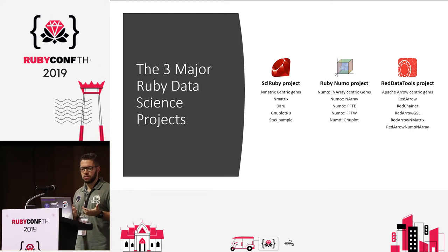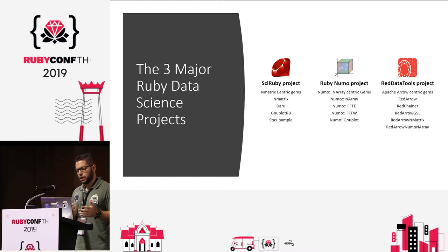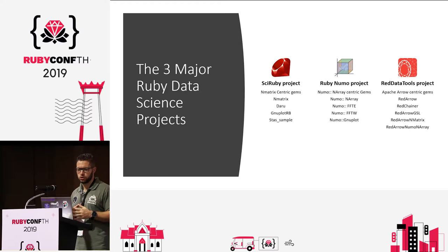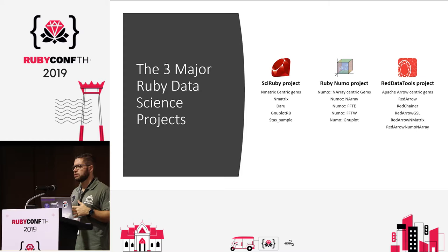The big problems are that NMatrix has a performance issue for at least two years, and NRA is way faster but you can't use it with Daru. So if you are doing data science in Ruby, you should probably go with the SciRuby project. If you are doing just scientific computing, the RubyNumo project is probably best for you. The Red Data Tools project is newer and currently lacks data manipulation libraries — just input and output — but that will probably be solved with time.